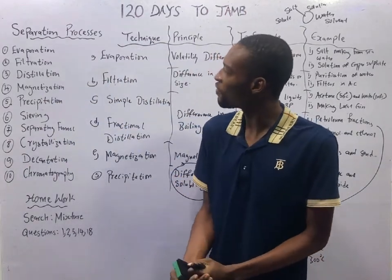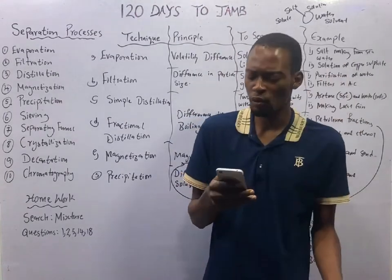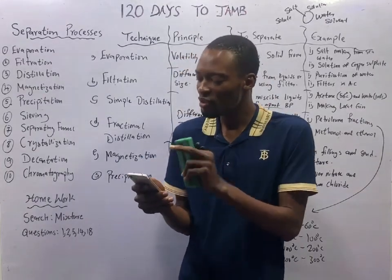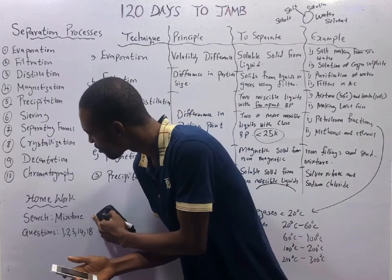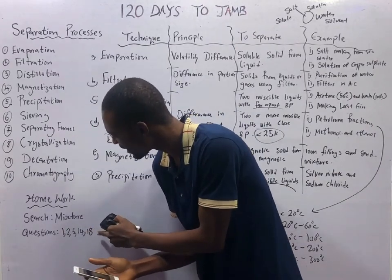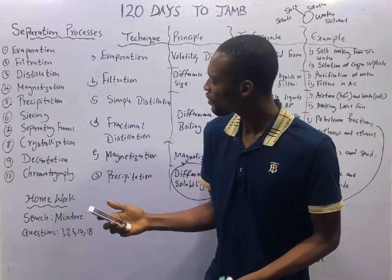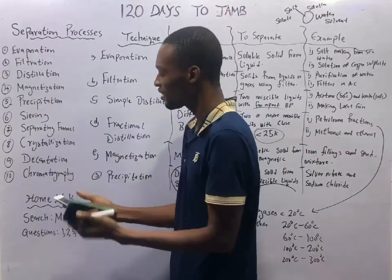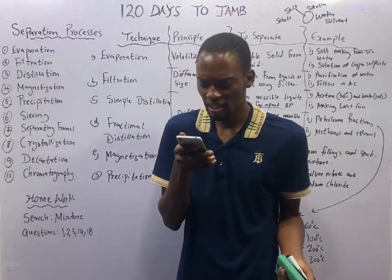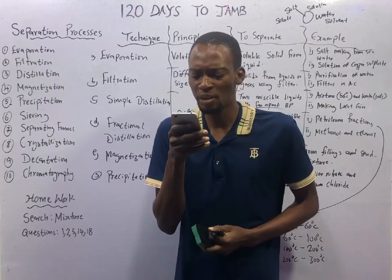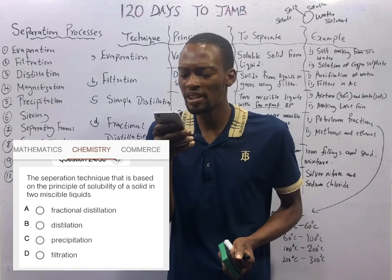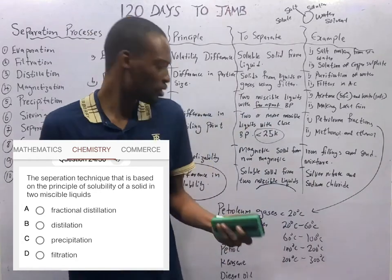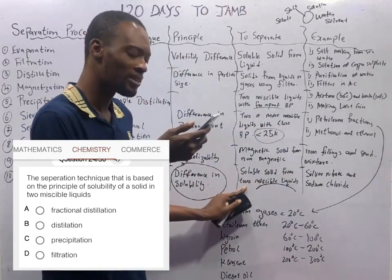We have come to the end of this episode. Let's take a look at the questions. When you open your Flash Nenas app, go to question search and search separation techniques — answer questions 1, 2, 5, 14, and 8. The first question: the separation technique based on the principle of solubility of a solid in two miscible liquids — that is precipitation. Distillation is difference in boiling points; filtration is difference in particle size.